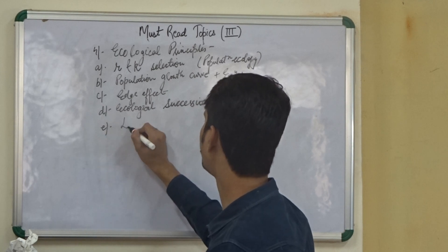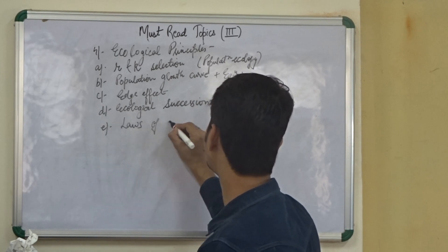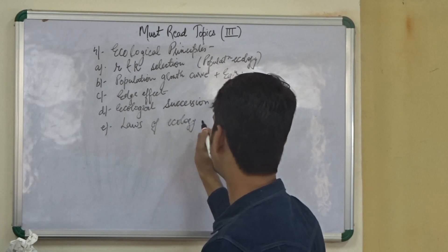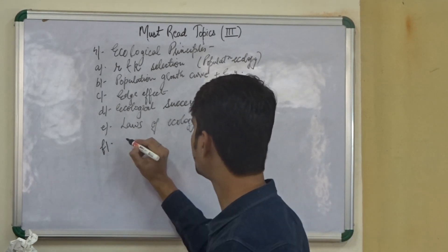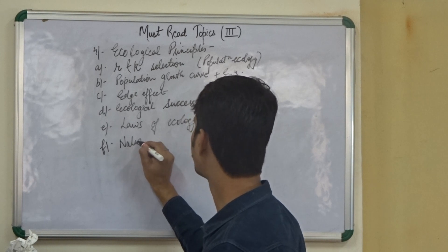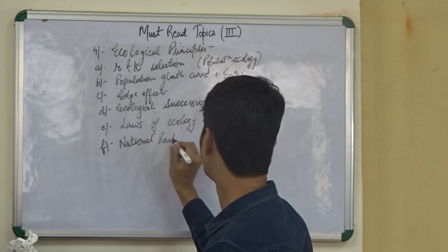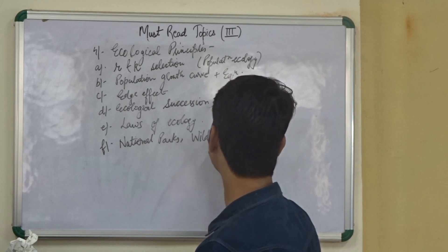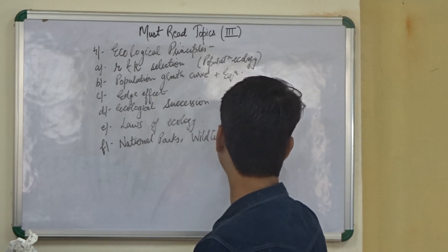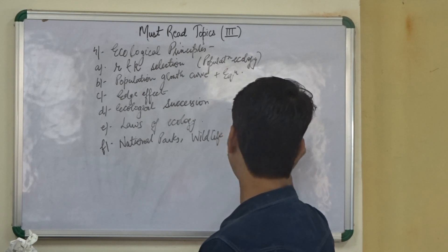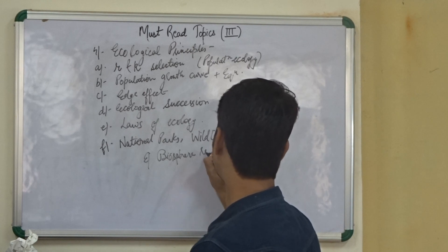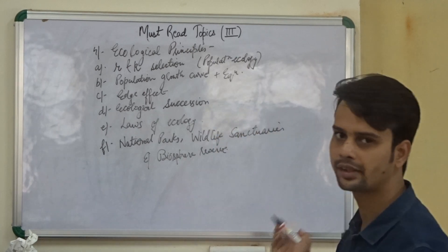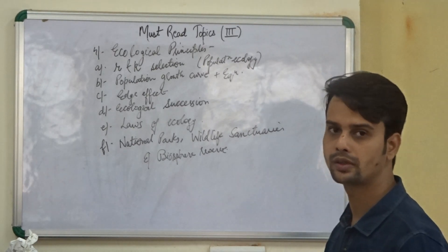We also need to know about the laws, the laws of ecology. There are various laws like Allen's law. So we need to know about all of them. Lastly, we need to know about the different national parks, wildlife sanctuaries, and biosphere reserves. So where these national parks, biosphere reserves, and wildlife sanctuaries are located.